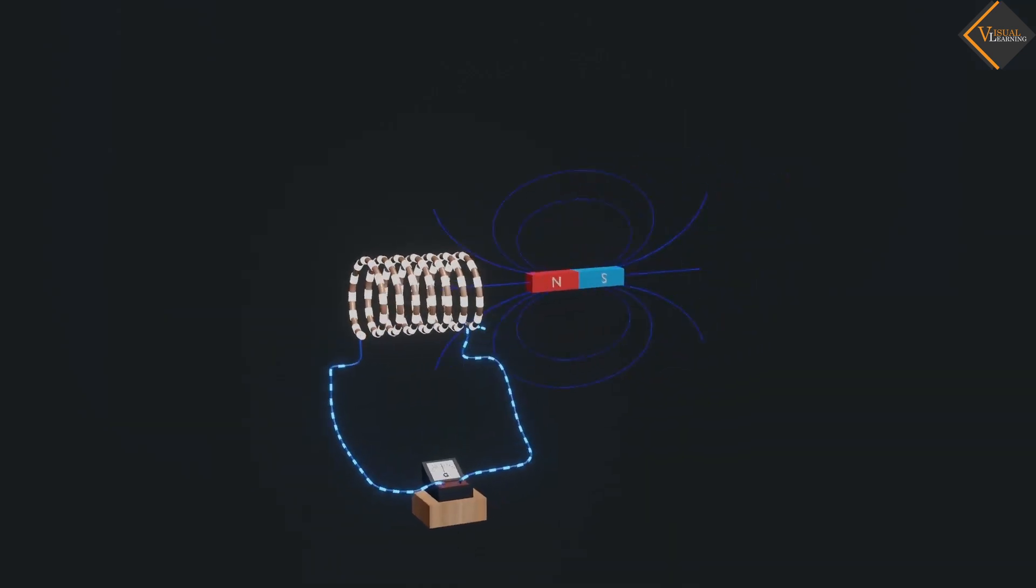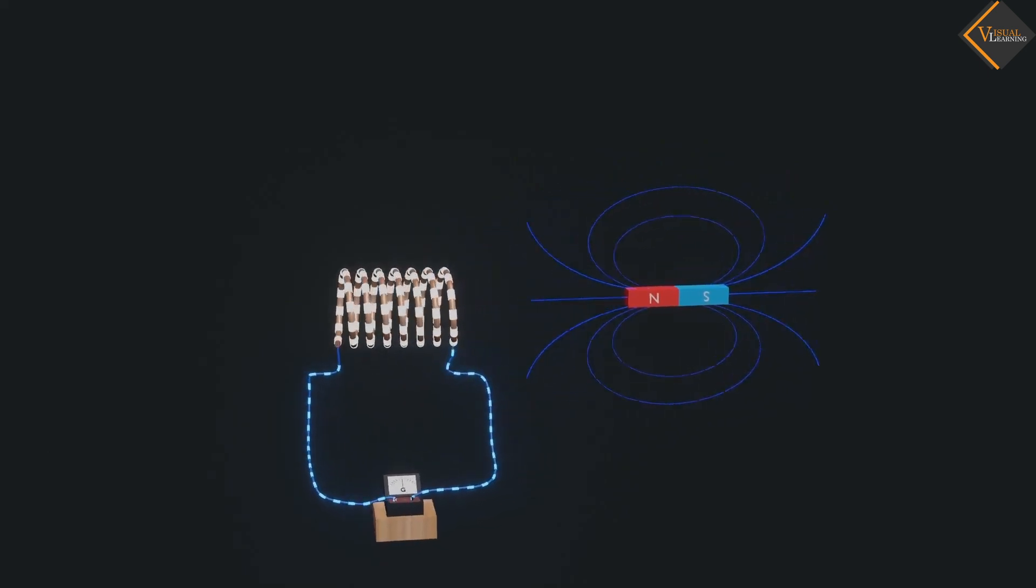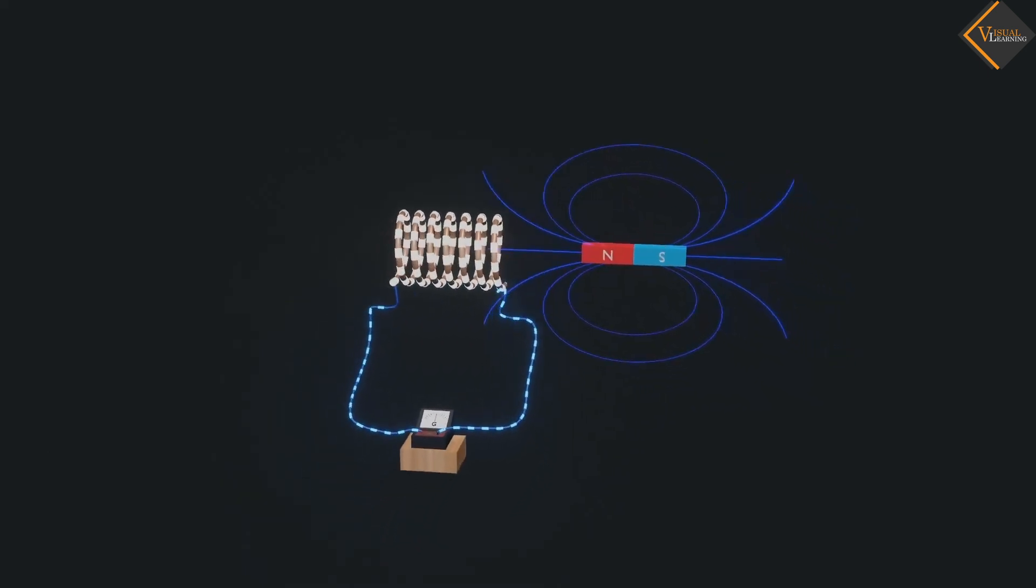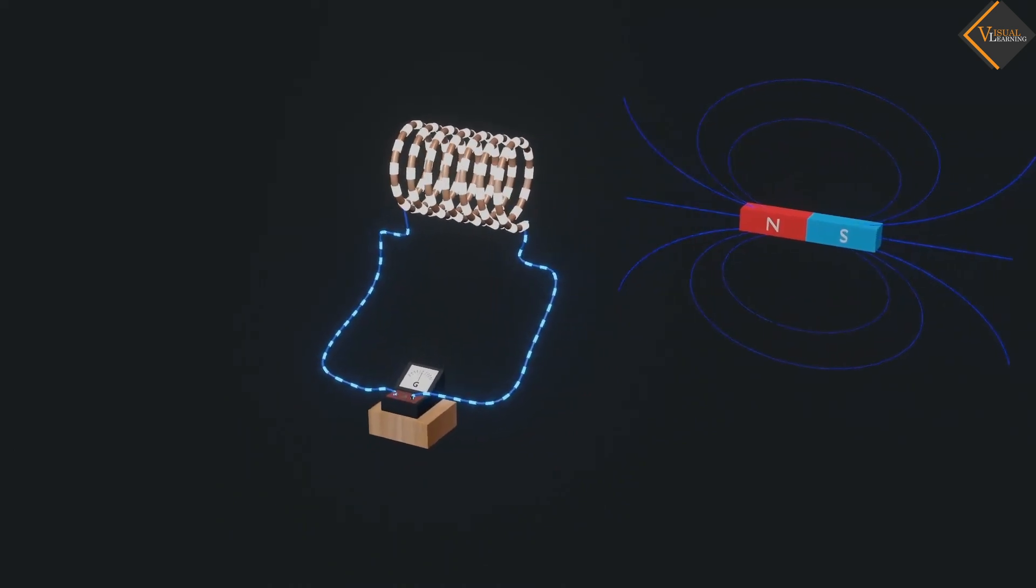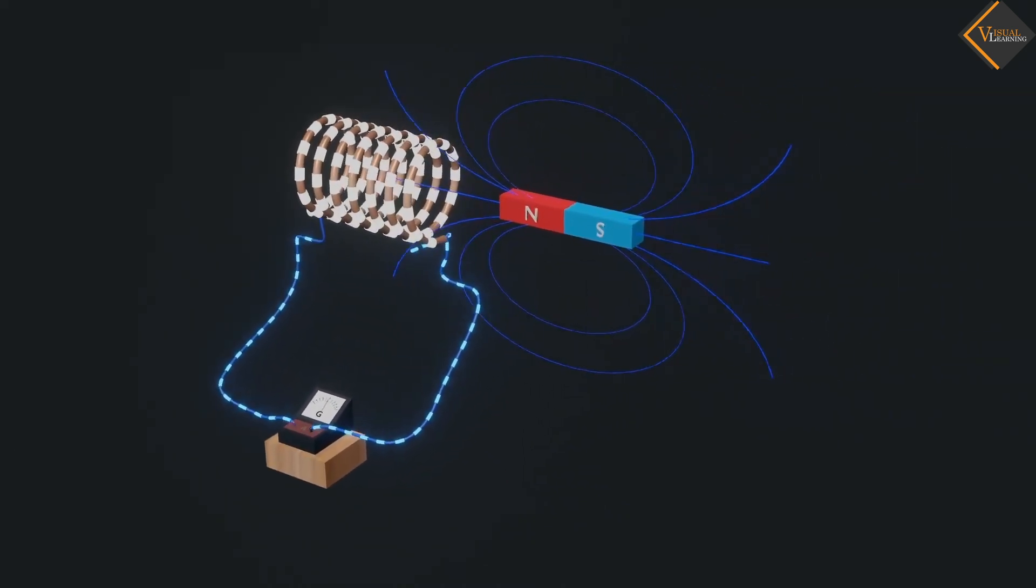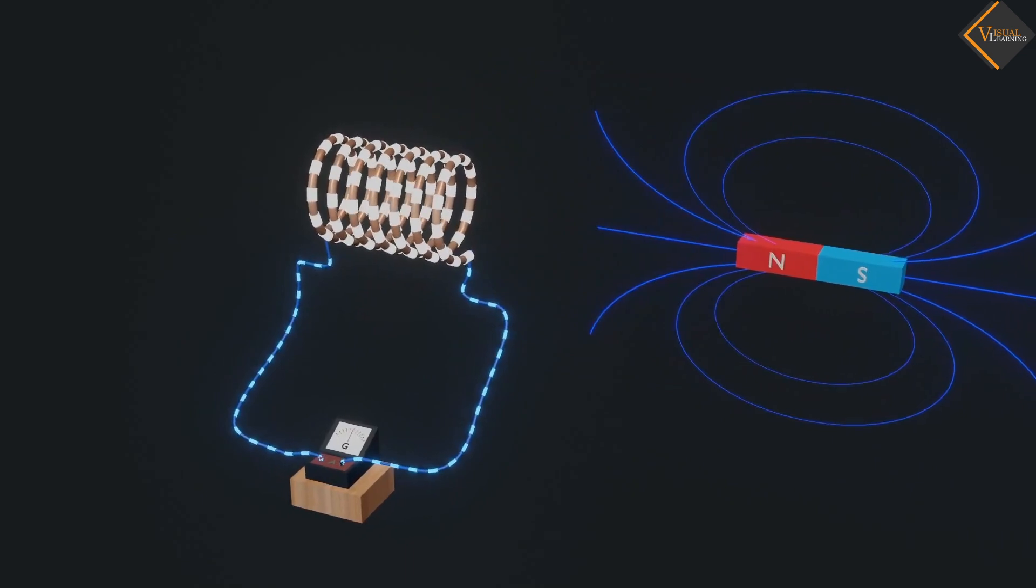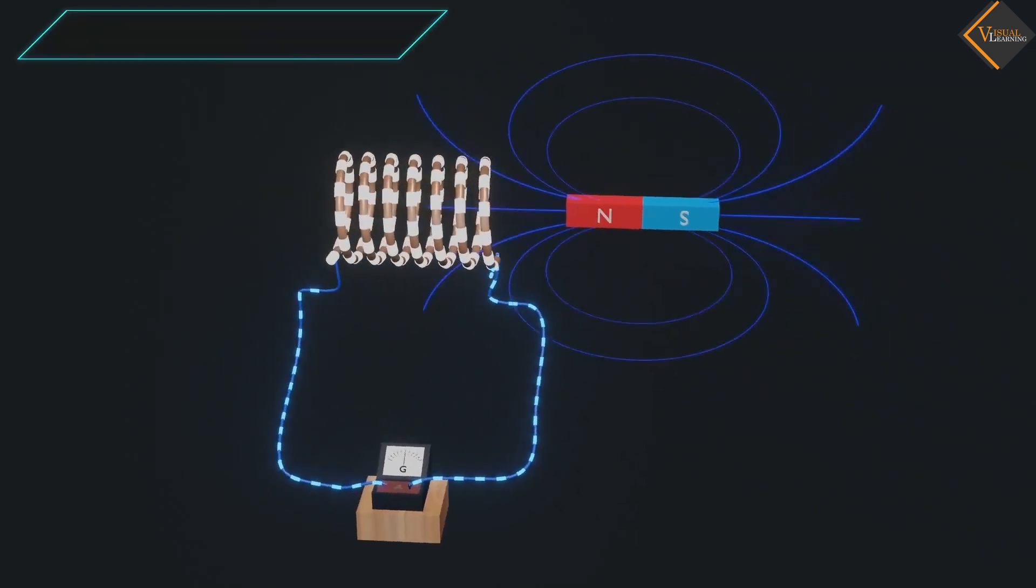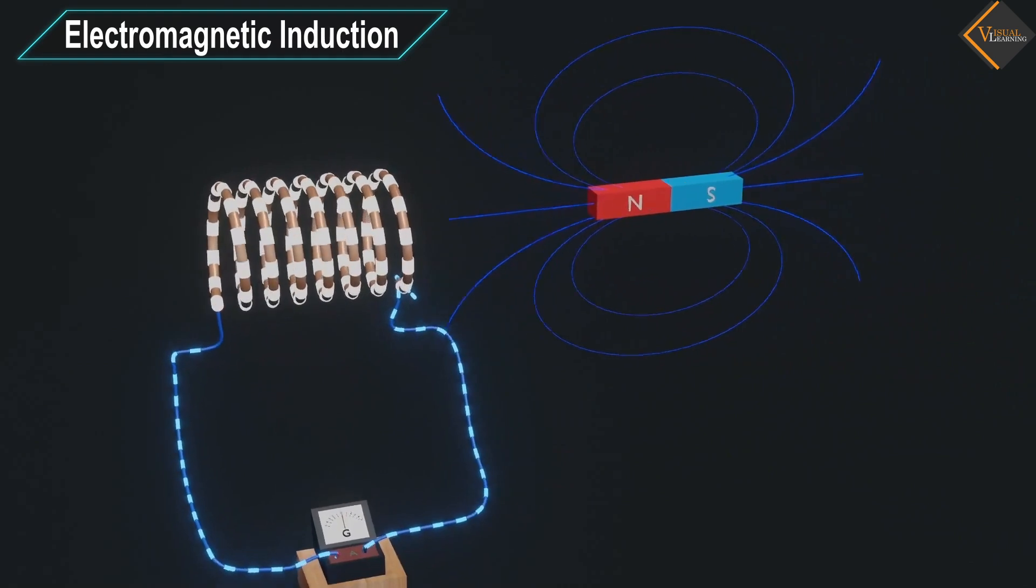By doing this experiment, Michael Faraday discovered that whenever there is change in magnetic field in the coil due to relative motion of the coil and the bar magnet current produces in the coil, and this phenomenon is known as electromagnetic induction.